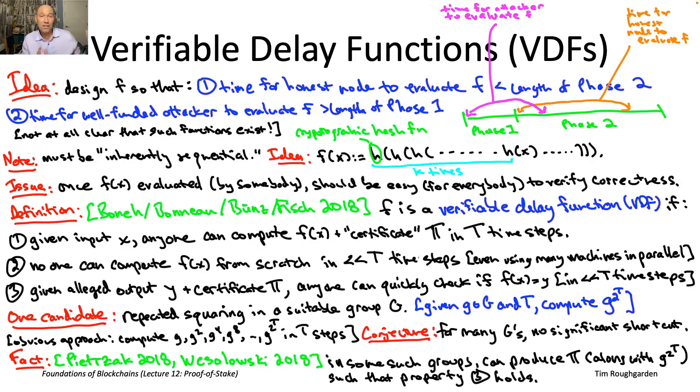So earlier in lecture 12, we talked about one super cutting-edge topic, a single secret leader election, and here is our second one, verifiable delay functions.